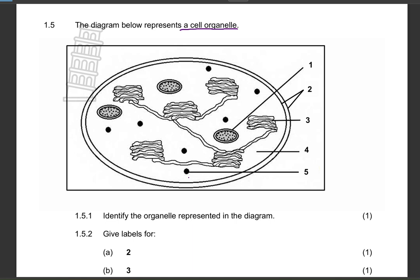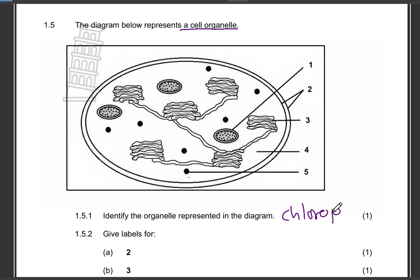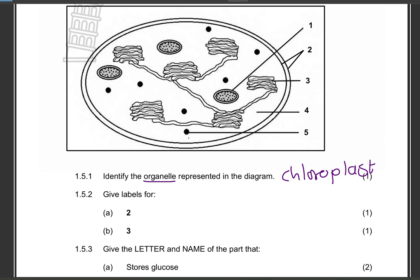Let us quickly answer this Grade 11 photosynthesis question from a previous Life Sciences question paper. The diagram below represents a cell organelle. Identify the organelle represented — that is the chloroplast. Remember, the organelle is the chloroplast, and the pigment is the chlorophyll. If you were to write chlorophyll for this particular question, your answer would be incorrect, because they are specifically asking for an organelle.